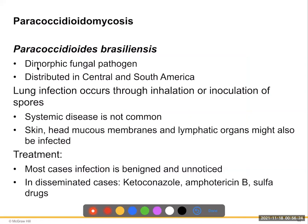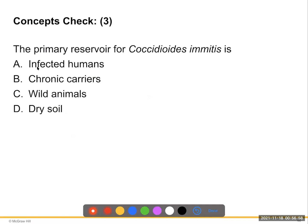Paracoccidioides brasiliensis is a dimorphic fungal pathogen — mold and yeast — distributed in Central and South America. Lung infection occurs through inhalation or inoculation of spores under the skin; systemic disease is not common. The skin, head, mucous membranes, and lymphatic organs may be infected. Most cases are benign and unnoticed; disseminated cases are treated with ketoconazole, Amphotericin B, or sulfa drugs. The primary reservoir for Coccidioides immitis is dry soil in semi-arid environments.